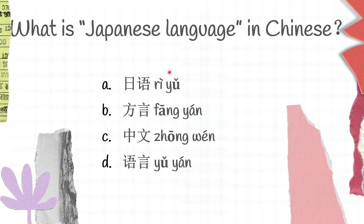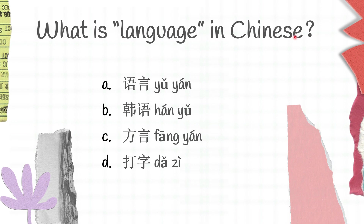Let's move on to the next question: What is language in Chinese? A 语言, B 韩语, C 方言, D 答字 — which one do you think is the right answer? 语言 is language, 韩语 is Korean language, 方言 is dialect, 答字 is type. And the right answer for this question is A — 语言.